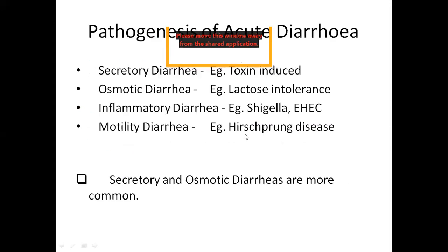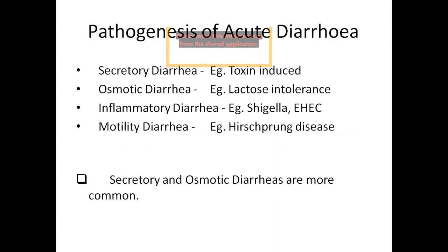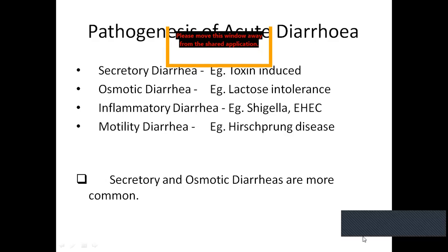Regarding pathogenesis, there are four types of diarrhea: secretory, osmotic, inflammatory, and motility. Secretory diarrhea is abnormal secretion of sodium and water into the small bowel - the typical example is toxin-induced diarrhea. Osmotic diarrhea involves poorly absorbed and osmotically active substances in the small bowel.